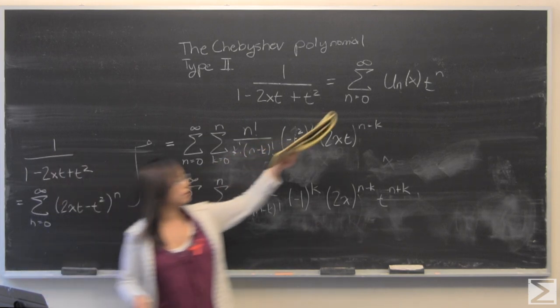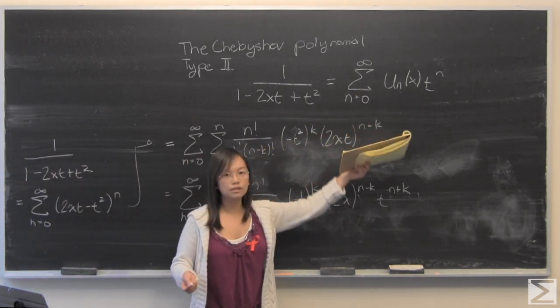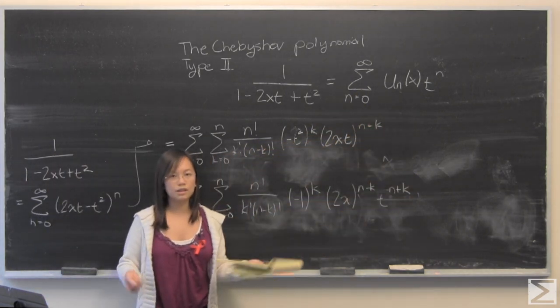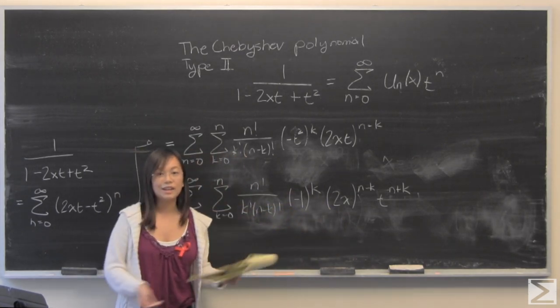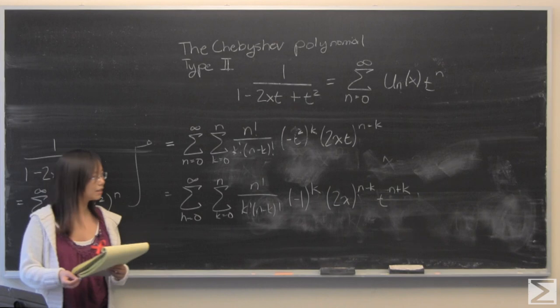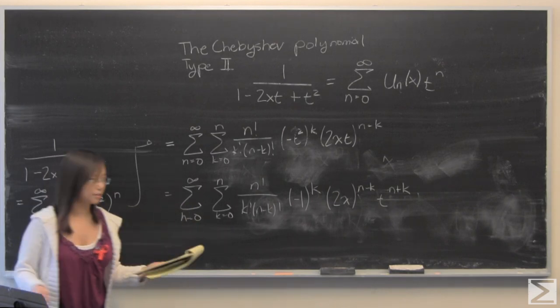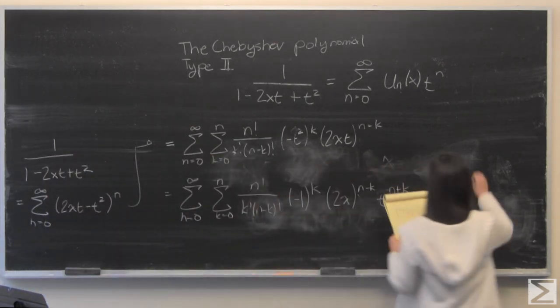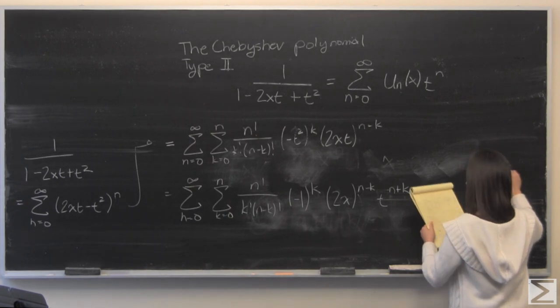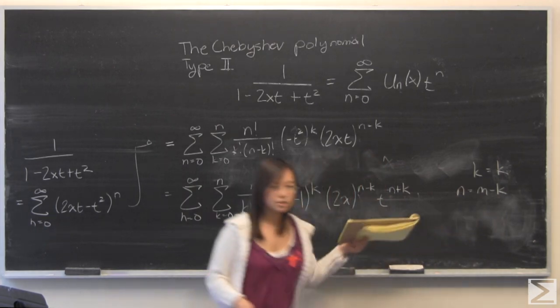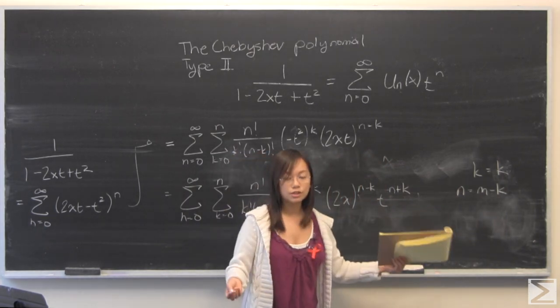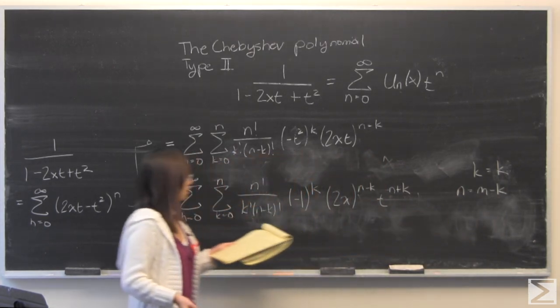n equals 0 to infinity of u_n x t to the n is the same thing if it was an n or if it was an l or a j. That is going to come up again later, but I'm going to do the following substitution. I'm going to let k be still equal to k. And I'm going to set n equal to m minus k. When I substitute that in, we need to first check the limits.